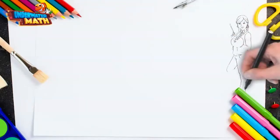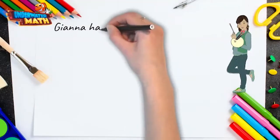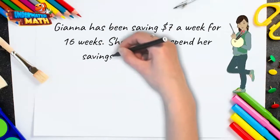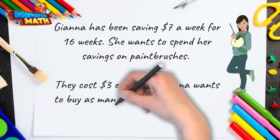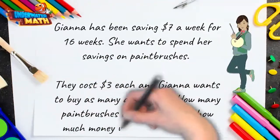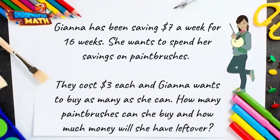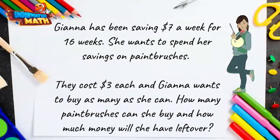Gianna has been saving seven dollars a week for 16 weeks. She wants to spend her savings on paintbrushes that cost three dollars each, and she wants to buy as many as she can. How many paintbrushes can she buy and how much money will she have left over? This is a multi-step problem that involves both multiplication and division.